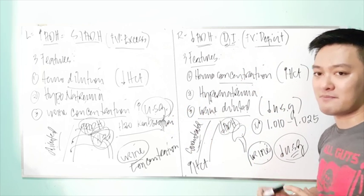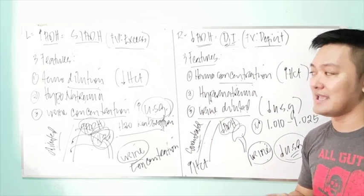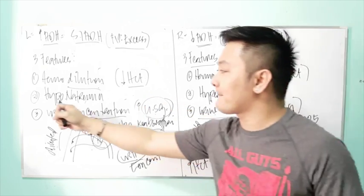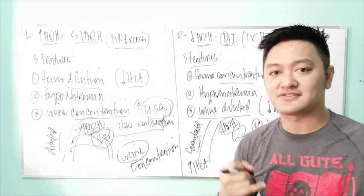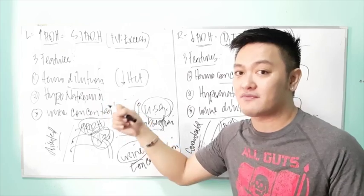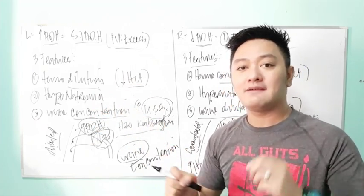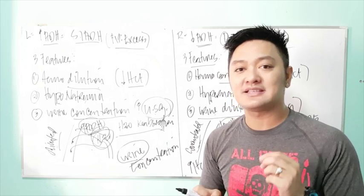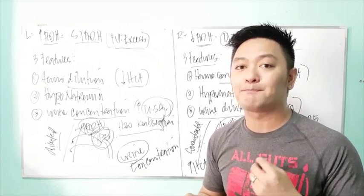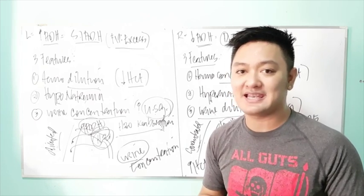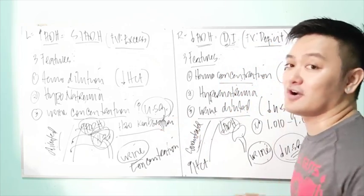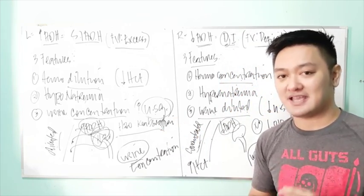These are the key things to remember about sodium imbalances. If the cause of hyponatremia is sodium deficiency — not hemodilution — the best solution to treat it is plain NSS or normal saline solution.